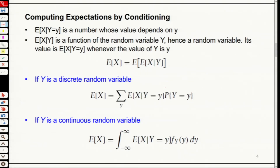Even with independent random variables, you can do a simulation. X is a random variable, Y is a random variable, they are independent. We discussed this before: independence does not mean they are mutually exclusive, and independence does not mean you cannot add them together. Even if X plus Y equals some value, X and Y can still be independent random variables.